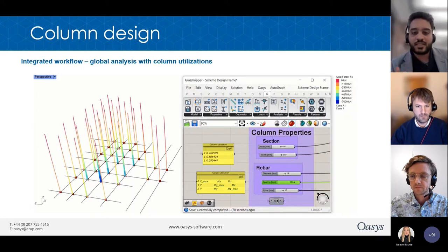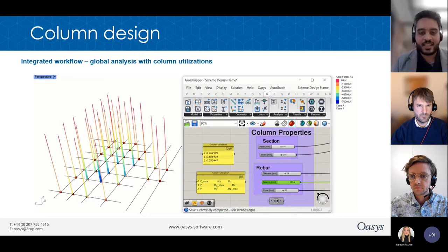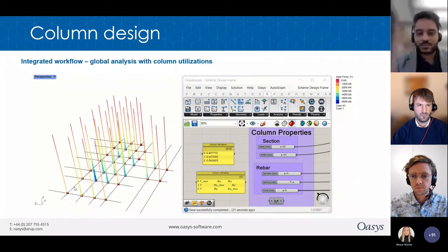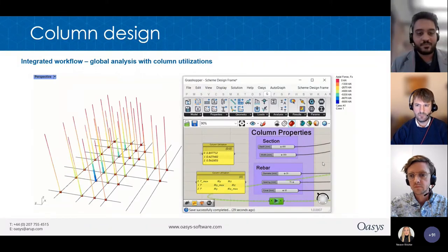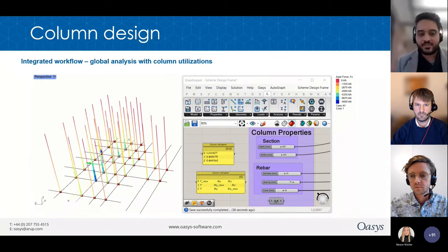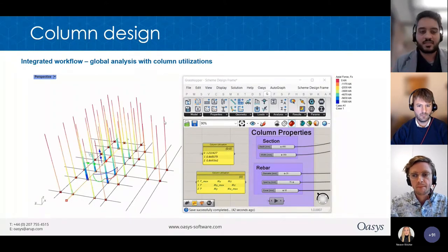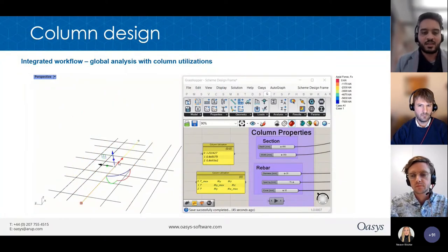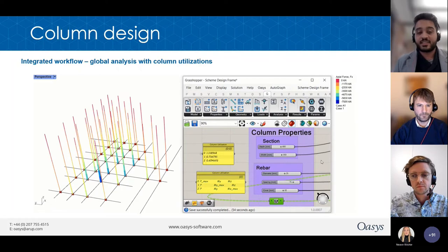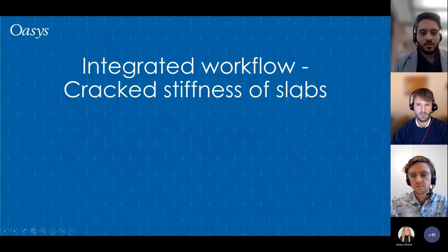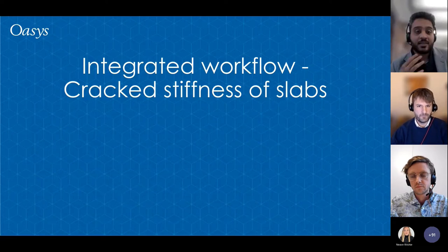I personally set the script to show three different utilization functions to understand which is the dominant internal action. You could also get a single utilization as the maximum of the three. For simplicity all column cross-sections were the same size here, but the obvious next step is to group columns based on loads and get different sizes for different groups — at which point you've essentially completed a scheme design exercise for the columns.